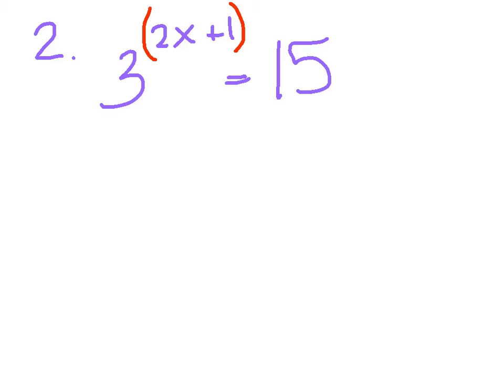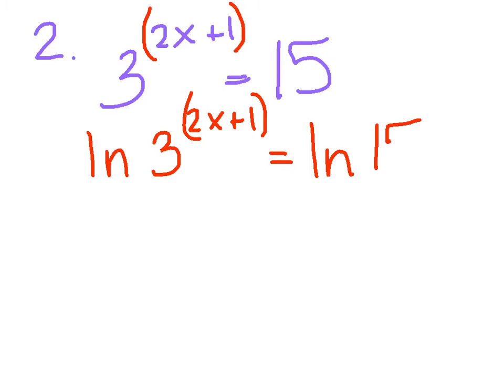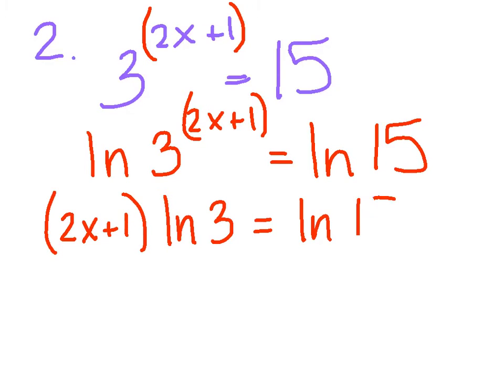Running through those three steps we had, my goal is to make sure the base and exponent are together. And they are. Again, there's nobody in front or behind it. So step 1 is done. You can either take the common log or natural log of both sides. I'm going to use natural log. So the ln of 3 to the 2x plus 1 equals the natural log of 15.